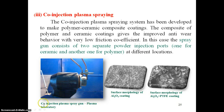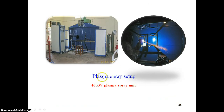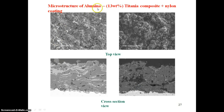A schematic diagram shows the co-injection plasma spray setup — the gun, plasma laboratory — giving the surface morphology of aluminium oxide coating, and the surface morphology of Al2O3 plus PTFE coating. The schematic setup diagram of the plasma spray setup shows a 40 kW plasma spray unit and gives the microstructure of aluminium 30% titanium composite plus nylon coating. In the top view some particles are visible at the flat surface, and in the cross section the plasma structure is shown.